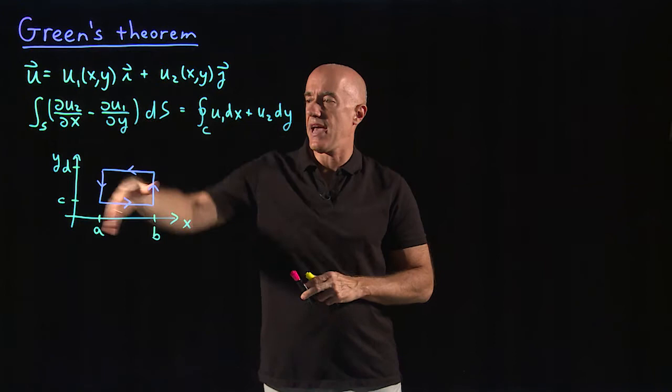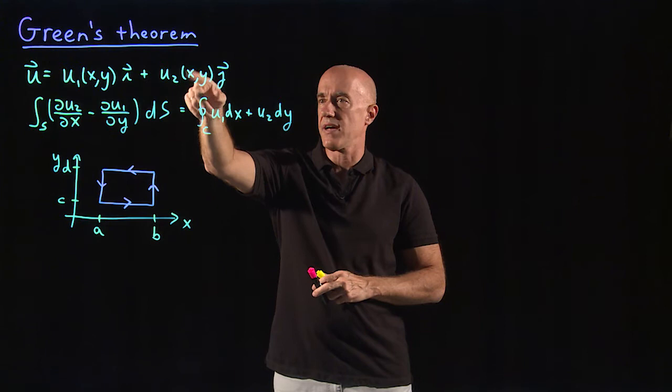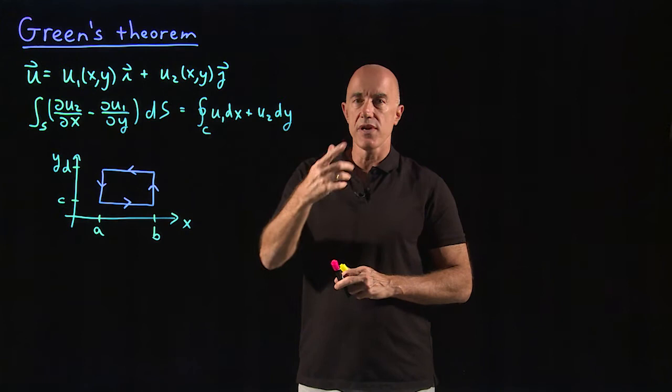So for Green's theorem, we have a vector field in the xy plane equal to u1, which is a function of x and y, times i, the unit vector in the x direction, plus u2 of xy times j, the unit vector in the y direction.